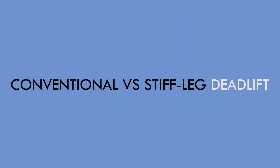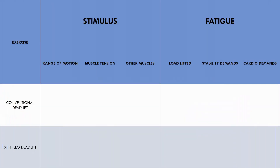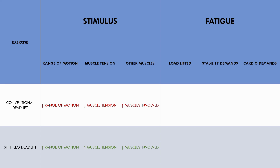The first example is performing a conventional deadlift versus a stiff leg deadlift for the hamstrings and glutes. The conventional deadlift doesn't take these muscles through a full range of motion, there is less tension on the hamstrings throughout the movement, and there are many other muscles and joints involved in the lift. The stiff leg deadlift, on the other hand, uses a larger range of motion, places tension on the hamstrings throughout the entire movement, and there is less tension placed on the spinal erectors and lats. The conventional deadlift involves heavier loads, higher stability demands, and higher cardiovascular demands since the load being moved is much heavier.